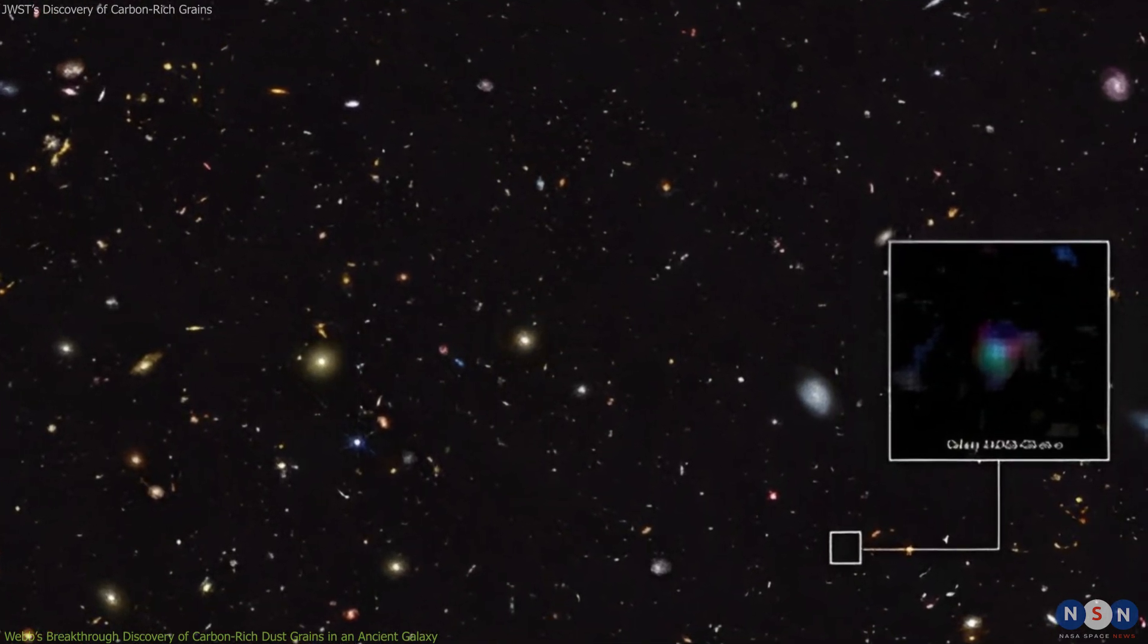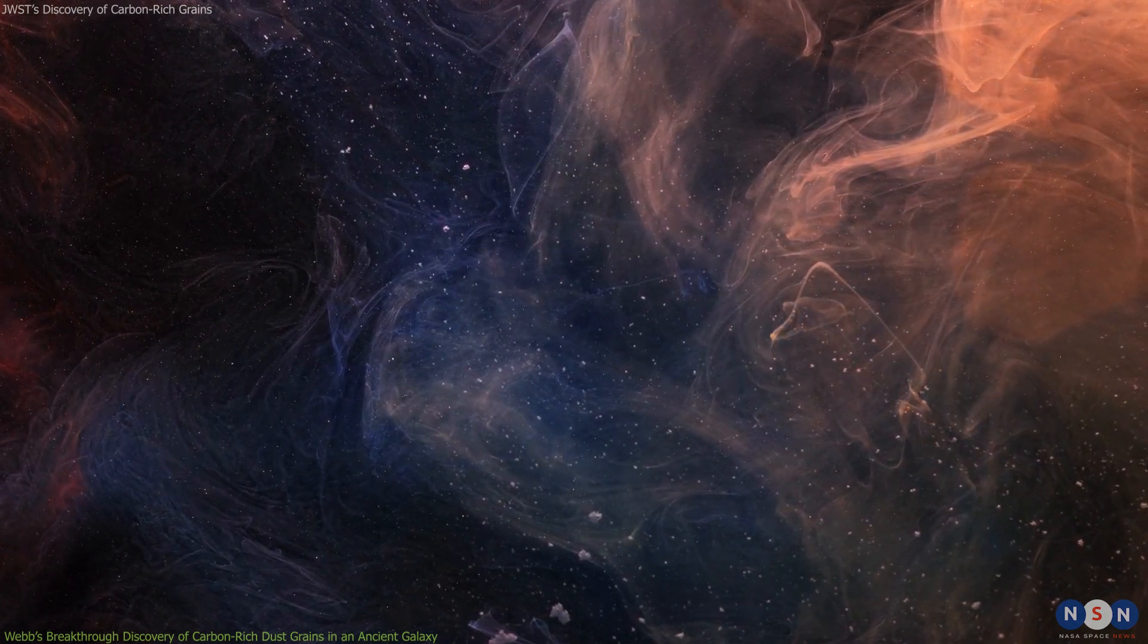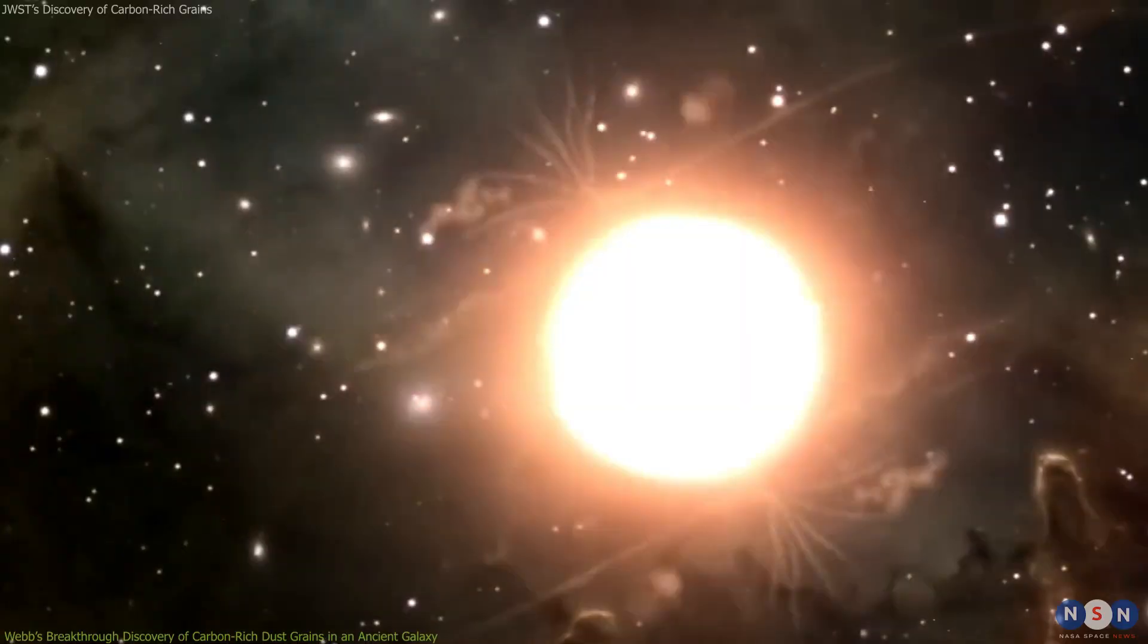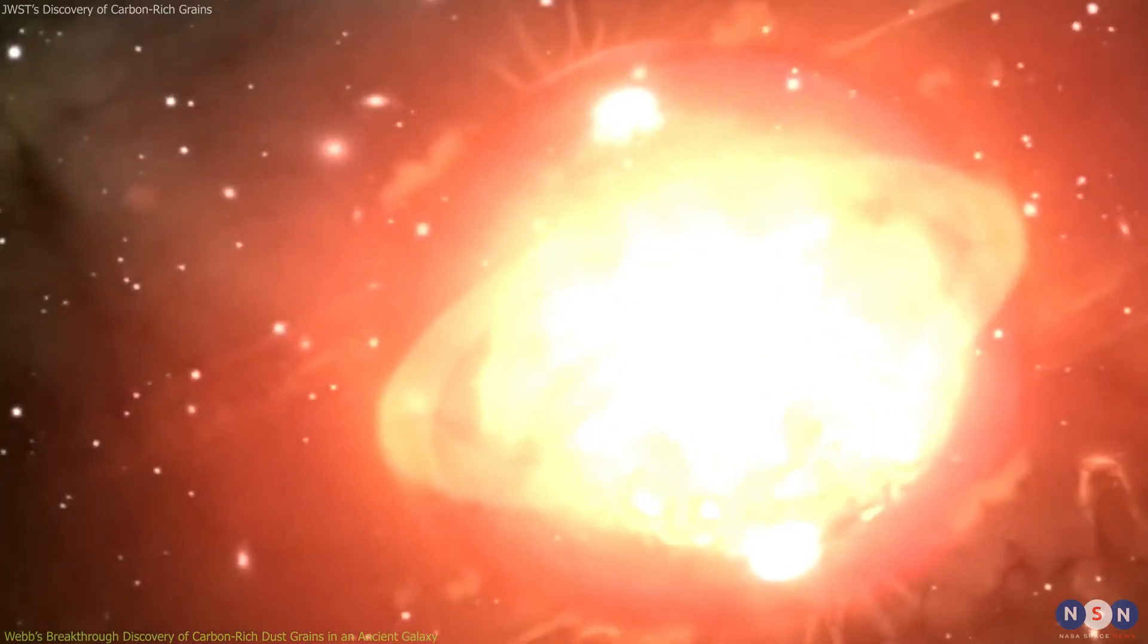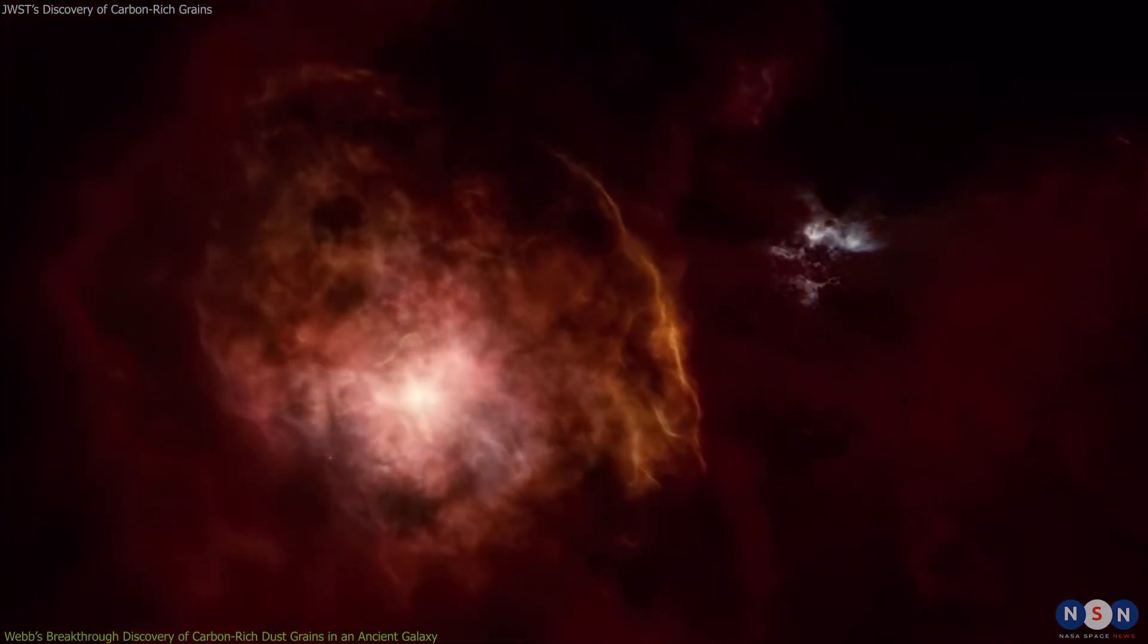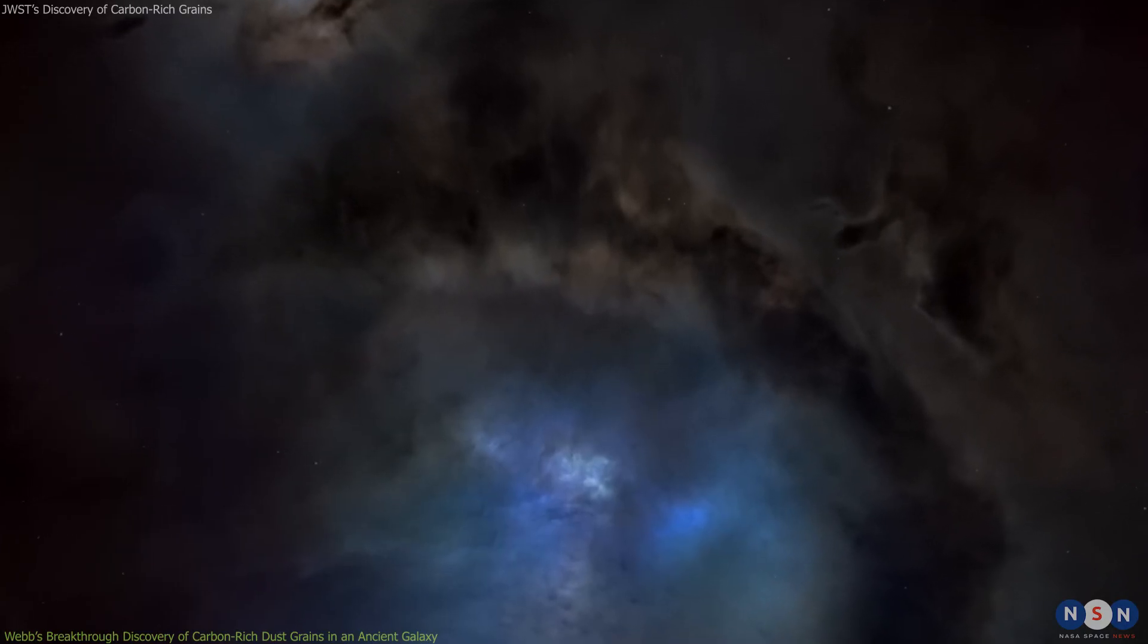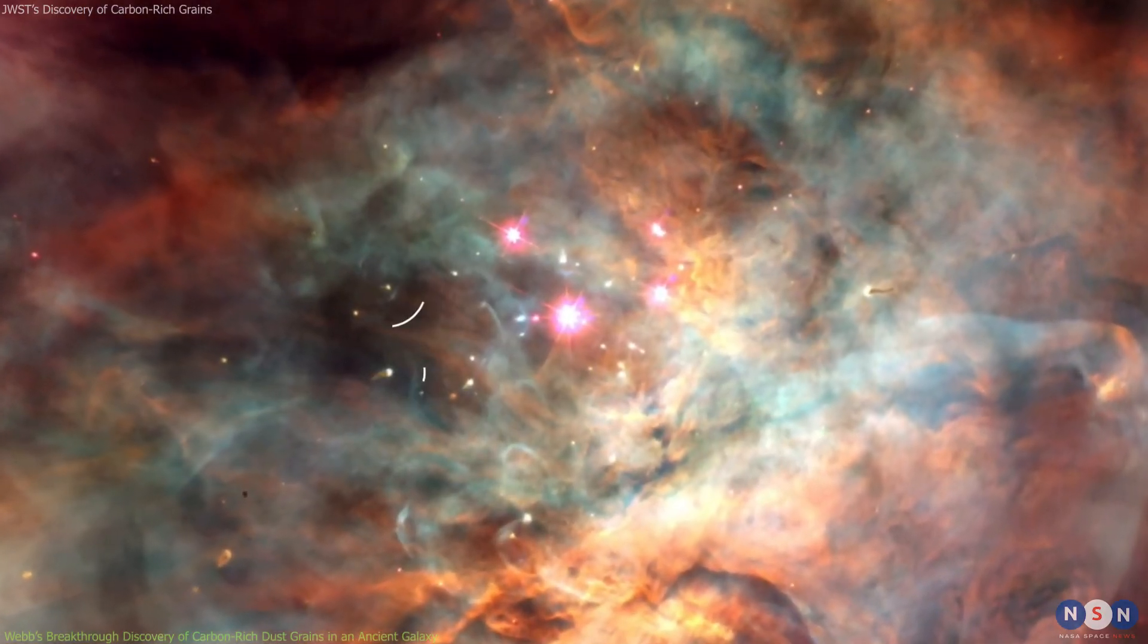The detection of PAHs in this galaxy is remarkable for several reasons. First, it implies that this galaxy has a lot of carbon in its dust grains, which is unusual for such an early epoch. Carbon is one of the elements that are produced by stars through nuclear fusion and then released into space when stars die. However, most stars take billions of years to do so, which means that there should not be much carbon available in the first billion years of cosmic time.